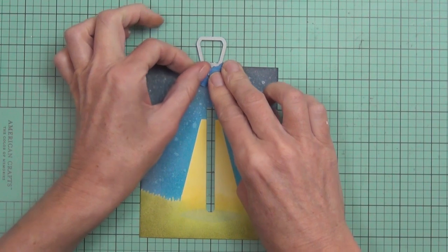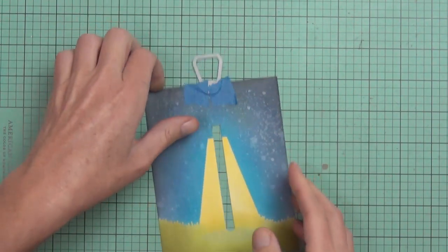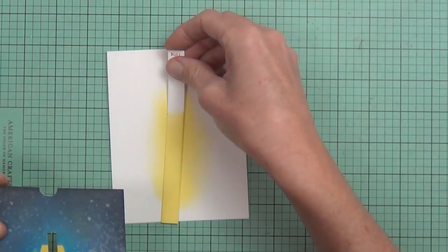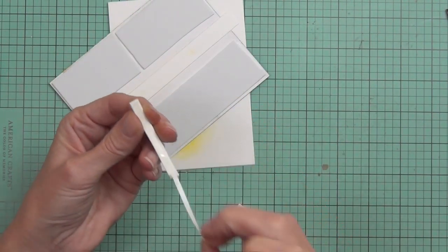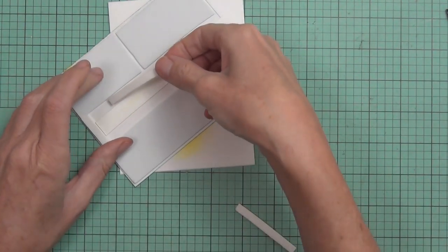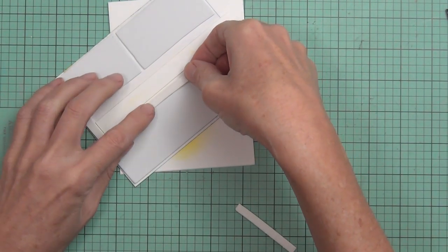Basically, I'm just making a tab in the top of my card by using the handbag handle, and that's out of the City Ladies die set that coordinates with one of the Leading Ladies sets.